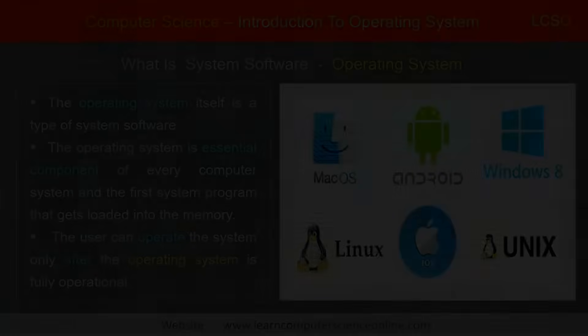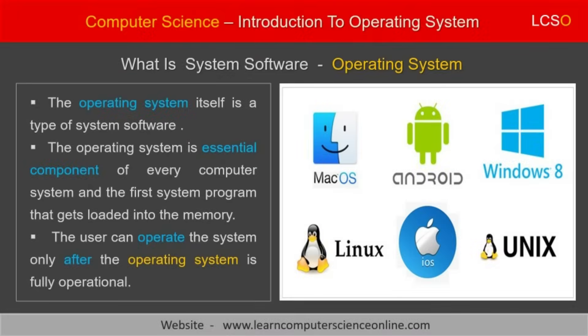An operating system is a group of software specially designed to help the user to manage and operate the computer system. In other words, the operating system is a type of system software that works as an interface between the system user and the computer hardware.